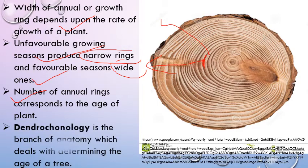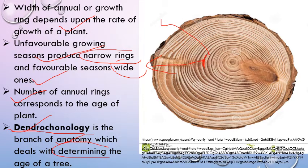The term dendrochronology refers to the branch of anatomy that deals with determining the age of plants by studying annual rings.